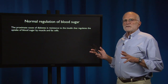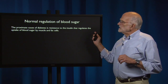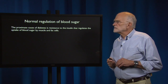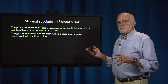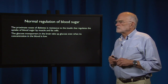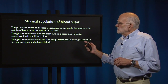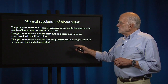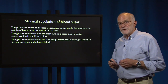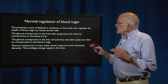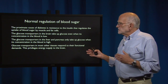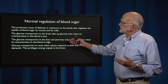The proximate cause of diabetes is insulin resistance, and that is what regulates the uptake of blood sugar by muscle and fat cells. The glucose transporters in the brain can take up glucose even when its concentration in the blood is low. The glucose transporters in liver and pancreas only take up glucose when its concentration is high. Glucose transporters in most other tissues respond to their functional demands, which privileges energy supply to the brain.